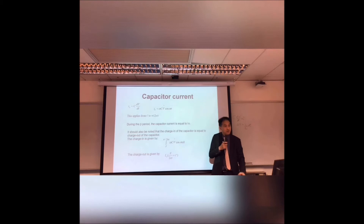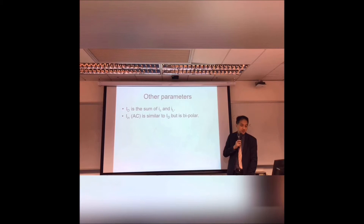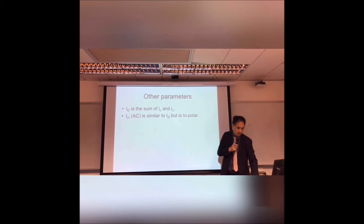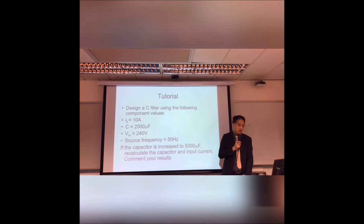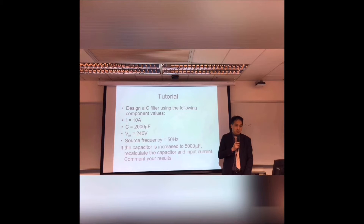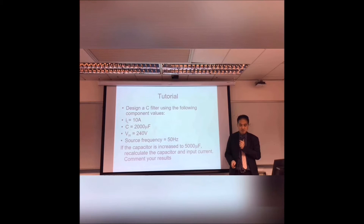So that is all the equations for the simple C capacitor filter. The diode current equals the summation of capacitor current and load current. The AC waveform must be bipolar — this is actually the bipolar format of the diode current through the bridge. Now for a quick tutorial: we design an AC capacitor filter with output load current equal to 10A, capacitor 2000µF, input 240V, source frequency 50Hz. We are asked to calculate all the parameters for the filter including the output voltage ripple and the capacitor current.